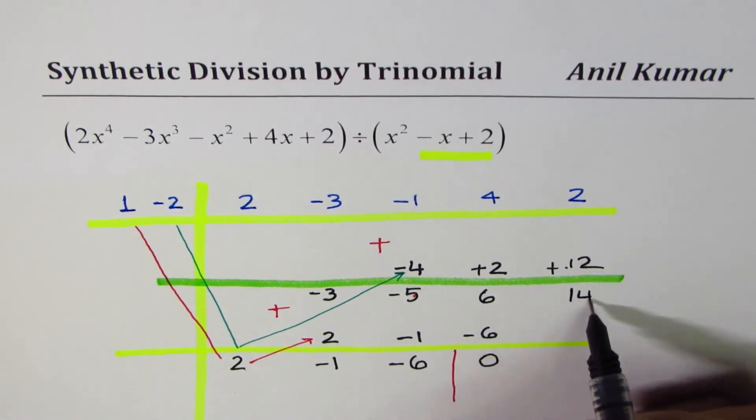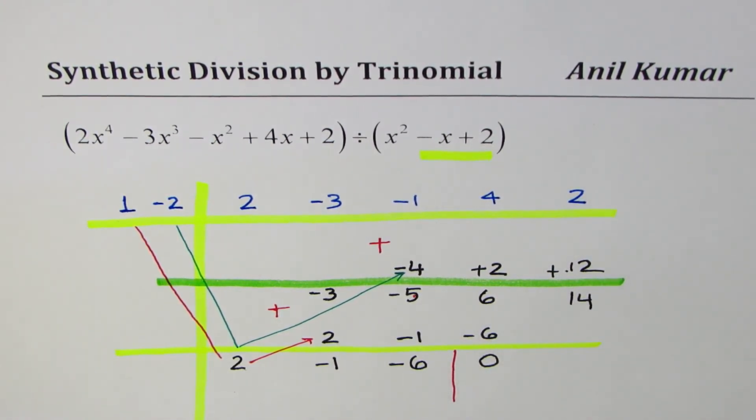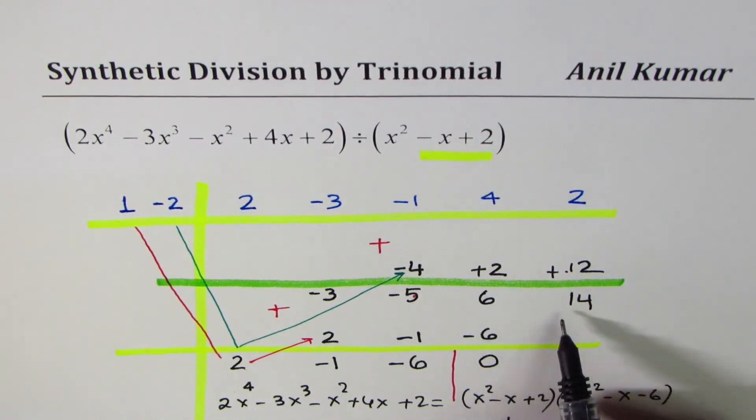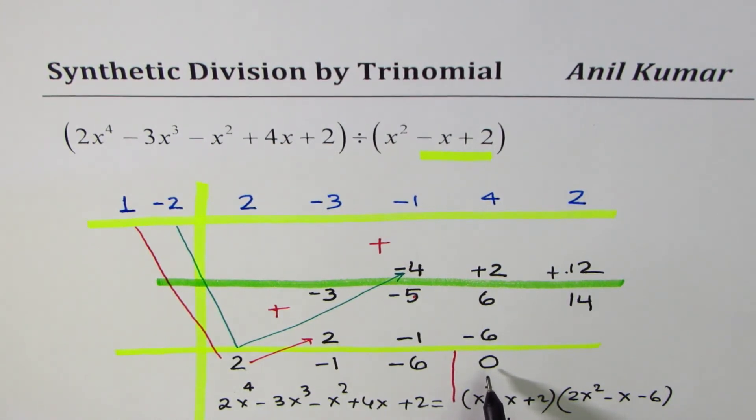Now we could clearly write down what the quotient is and what the remainder is. We could write our function as 2x to the power of 4 minus 3x cube minus x square plus 4x plus 2 as equal to product of these two, which is x square minus x plus 2 times 2x square minus x minus 6, plus the remainder. 0 is the coefficient for the linear term x, and the constant is 14, so plus 14. That becomes the division statement after doing synthetic division of a quartic equation with a trinomial.